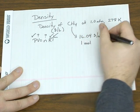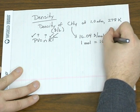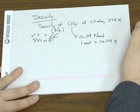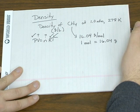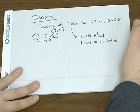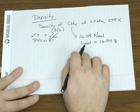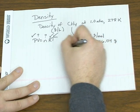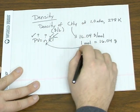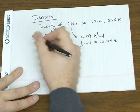In other words, one mole of methane has a mass of 16.04 grams. So we know the mass of one mole. Let's find the volume of one mole of gas.